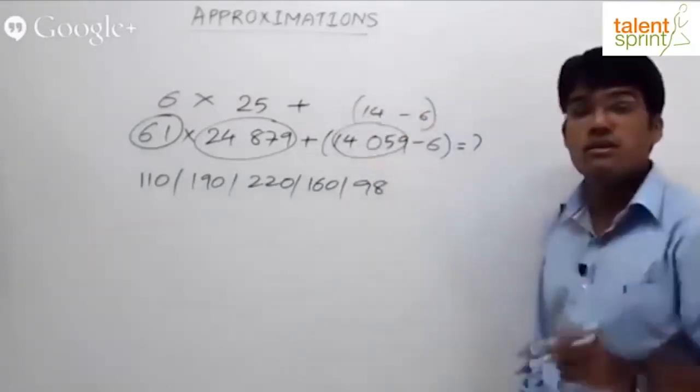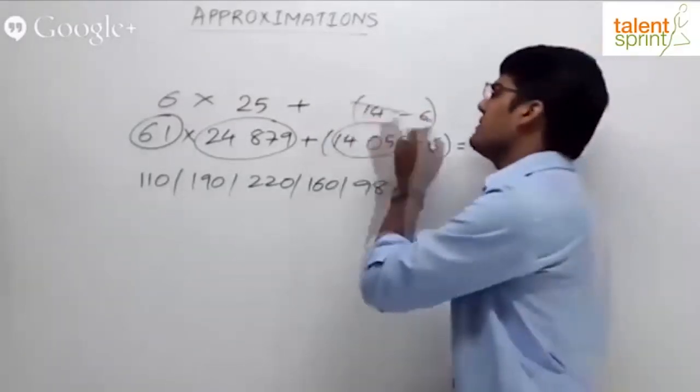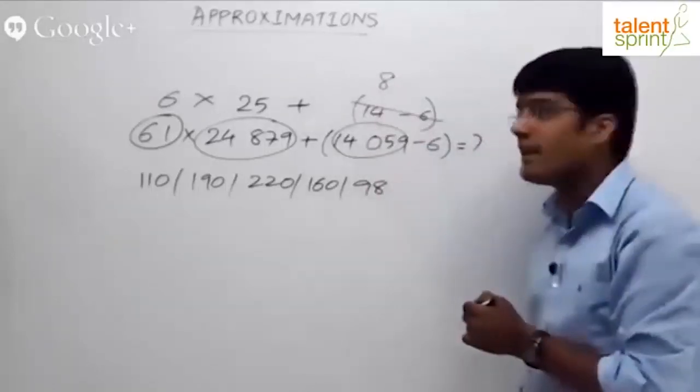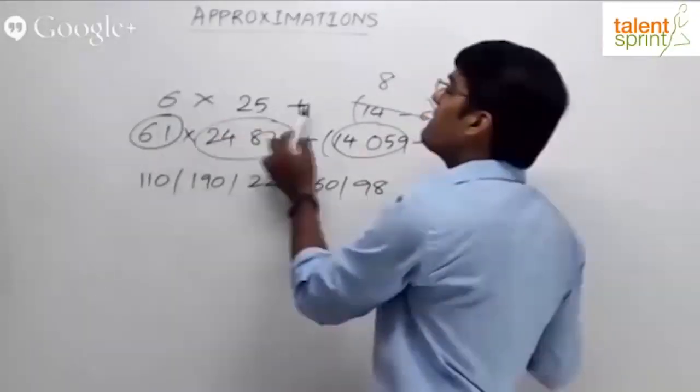This is within the brackets. As per the rules, first simplify the bracketed part. So 14 minus 6 becomes 8. Now 6 into 25 plus 8.